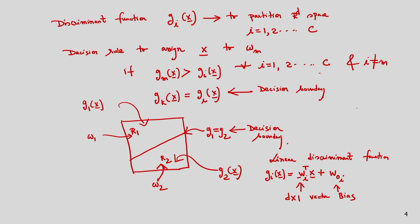Now I will move to the concept of statistical machine learning — that is, statistical pattern classification. In statistical pattern classification, the main concept comes from Bayes' law. You know in probability what Bayes' law is, and statistical pattern classification techniques are derived from this concept. I will explain what is the Bayes decision making in my next slide.